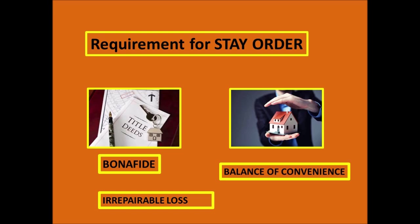For irreparable loss — if someone is causing damage to the property or carrying out construction, then you should have dated photographs as evidence. If you have these three sets of documents in hand, you will be able to prove your case in court, and after that, you will get a stay order.